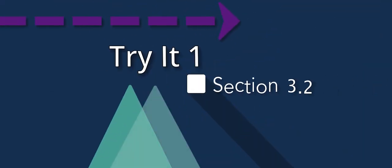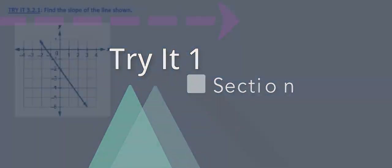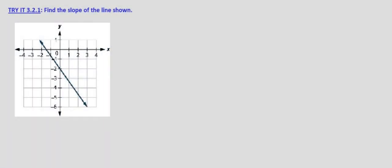In this problem, we're asked to find the slope of the line shown in the graph. The key to this is, if we're using a graph, a line that's been graphed, we need to look for whole number coordinates. Otherwise it gets a little hairy.